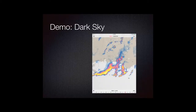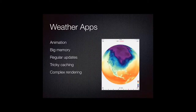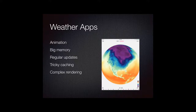There are a lot of interesting problems related to weather apps. One is the animation — you need to be able to show the user how things change over time, which requires a lot of memory. A weather app is also tied to the current time, so you have to deal with regular updates. You can't just cache all the data and show it, since the data becomes invalidated fairly quickly. And the rendering itself can get fairly complex — there are lookups involved for the false color imagery, for example.